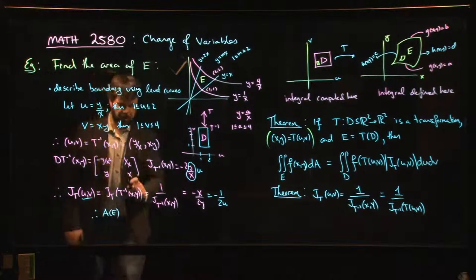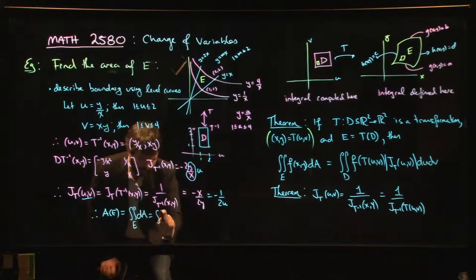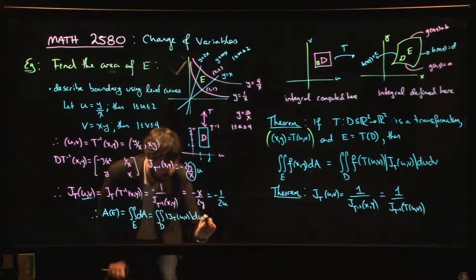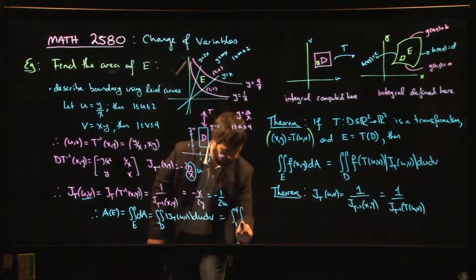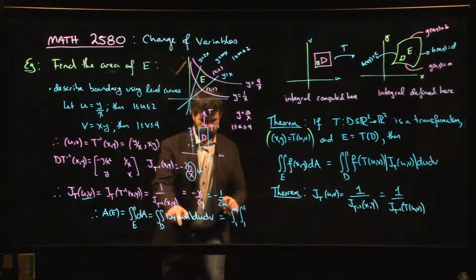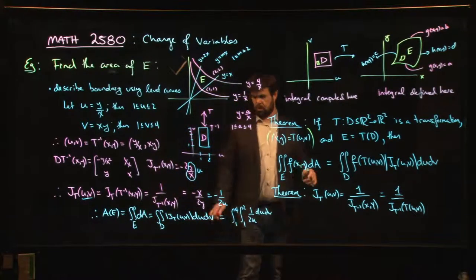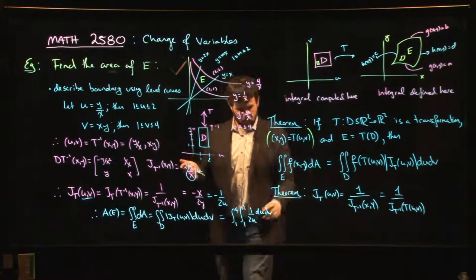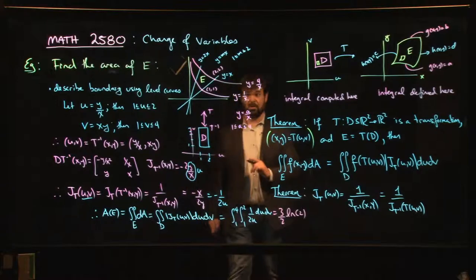So the area of E equals the integral over E of dA, which equals the integral over D of the absolute value of the Jacobian, du dv. That looks like the integral from 1 to 4, integral from 1 to 2 of 1 over 2u, du dv. The antiderivative for u gives log u over 2 evaluated from 1 to 2: log 2 minus log 1, which is log 2. So that's one half log 2, multiplied by 3 (from the v integral), giving 3 over 2 times the natural log of 2. That's the area of the region.